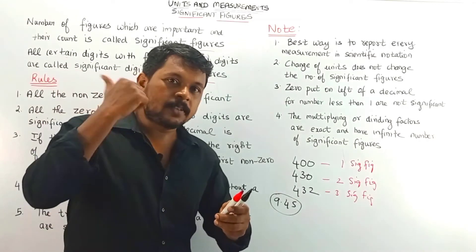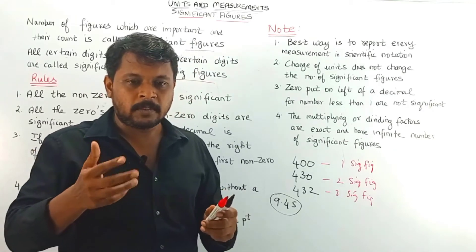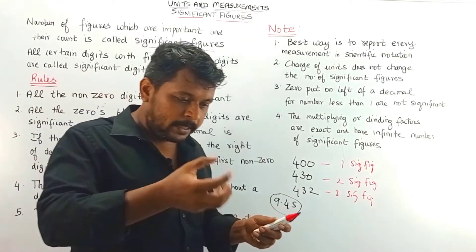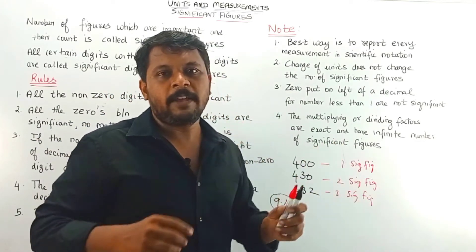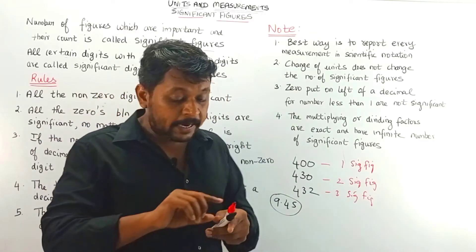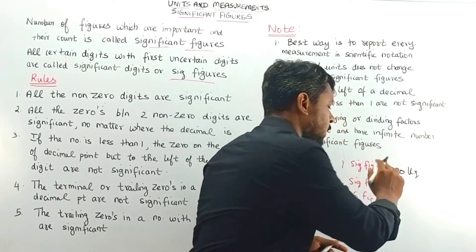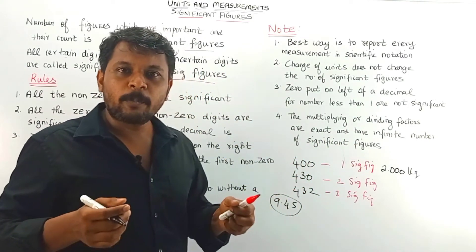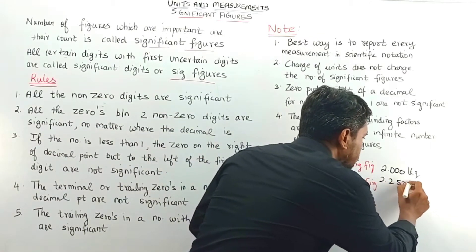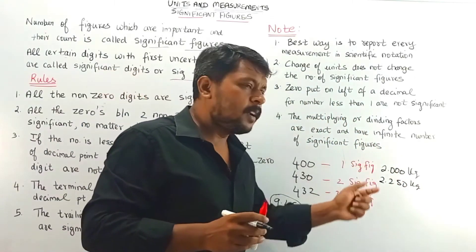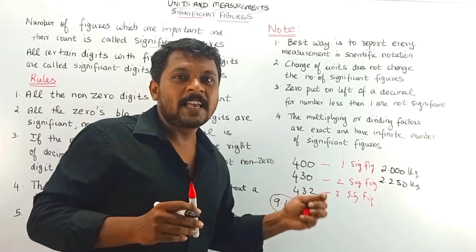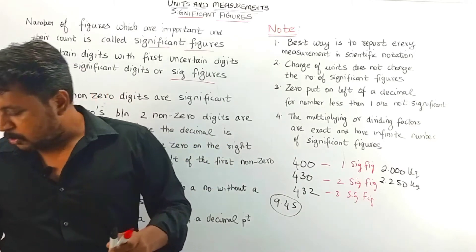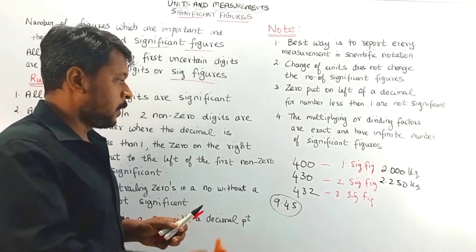Consider another example: your parents ask you to buy 2 kg of tomato. You go to the shop, put tomatoes in a container, and place it on the weighing machine. The first time it shows 2.000 kg. Another person takes the same tomato in a container and the weighing machine shows 2.250 kg. For these two conditions, how will you determine the number of significant figures? I have some rules to help with this.